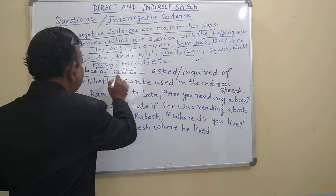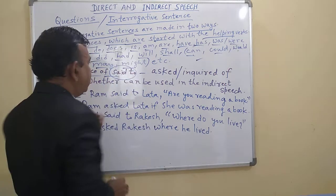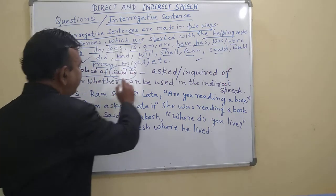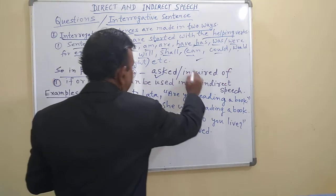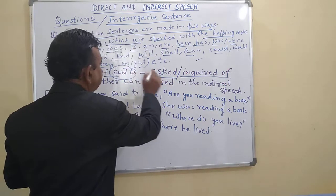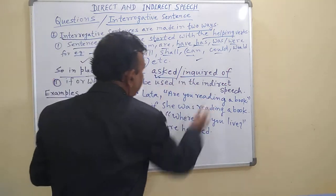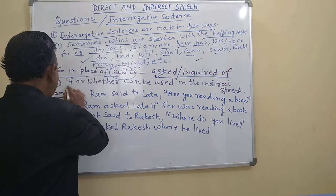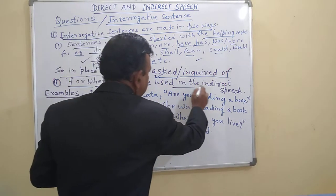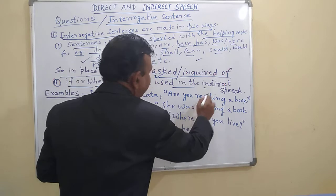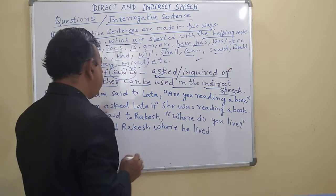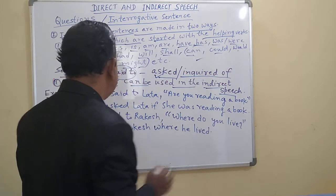So in the case of interrogative sentences, 'said to' changes into 'asked' or 'inquired of'. And 'if' or 'whether' can be used in the indirect speech — we will use 'if' or 'whether'.